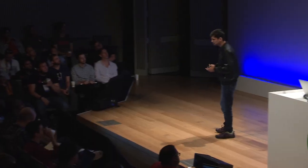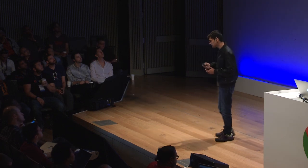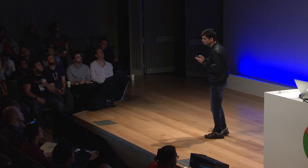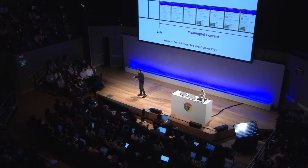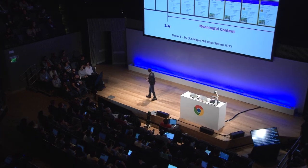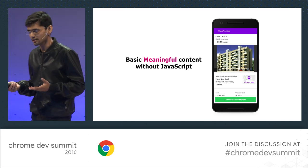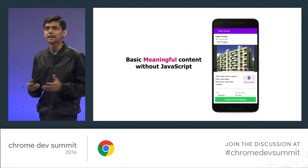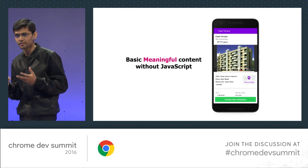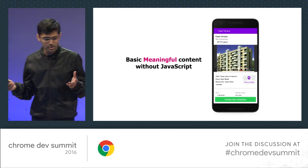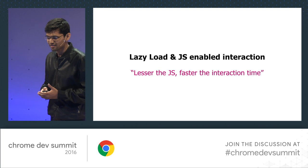We wanted to remove this totally. After enabling SSR, the first meaningful paint happened at 2.3 seconds — quite an improvement. All these tests have been run with WebPageTest. There's also a bonus: the basic meaningful content is available for everyone, including users on more than 2,000 types of devices with a variety of browsers and older versions.